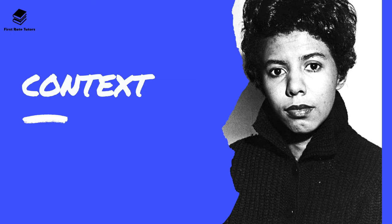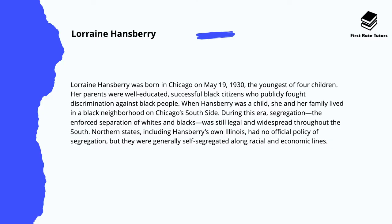Lorraine Hansberry was born in Chicago on 19th May 1930 and she was the youngest of four children. Her parents were well-educated, successful African American citizens who publicly fought discrimination against other African Americans in USA society at the time. When Hansberry was a child, she and her family lived in an African American neighbourhood on Chicago's south side. During this era, segregation — the forced separation of whites and blacks — was still legal and widespread throughout the southern part of America. Northern states, including Hansberry's own Illinois, had no official policy of segregation, however they were generally self-segregated along racial and economic lines.